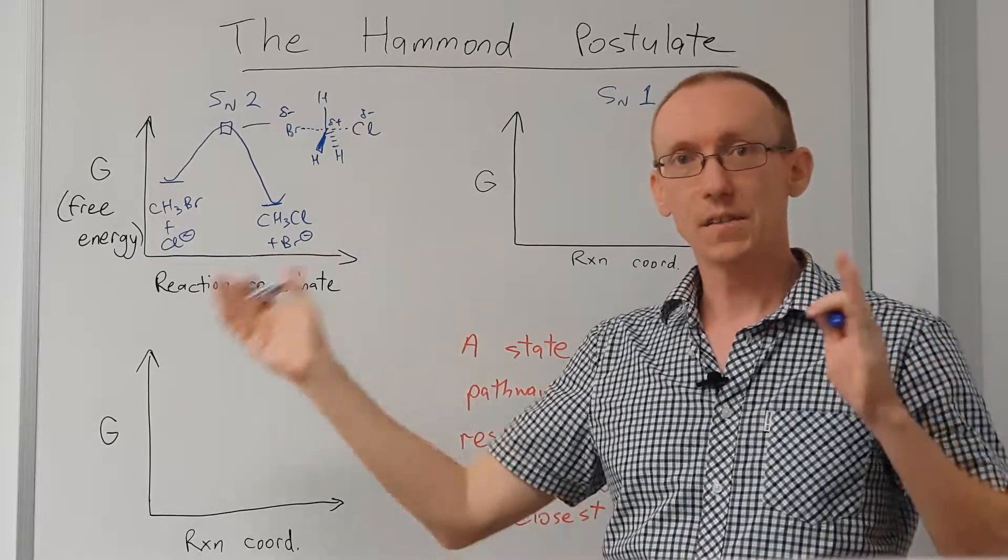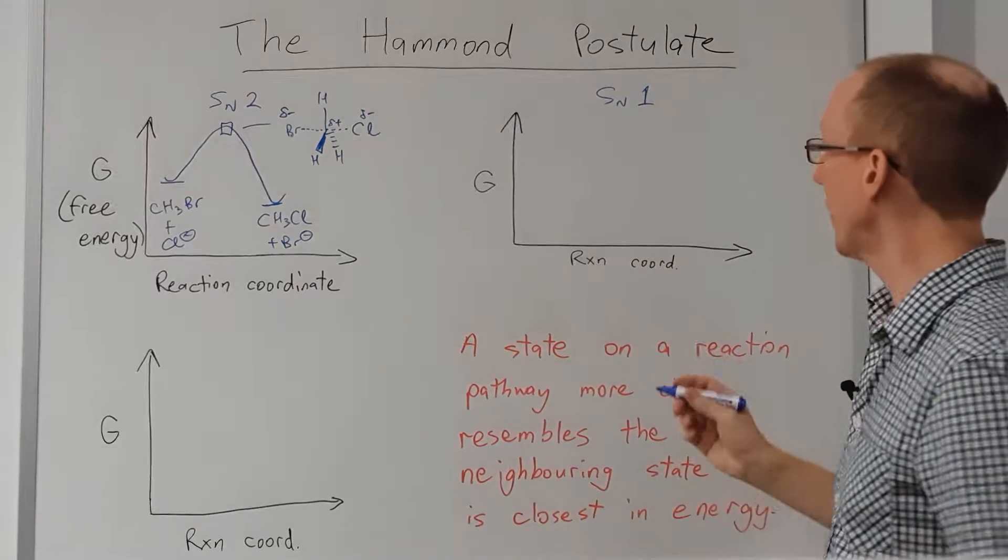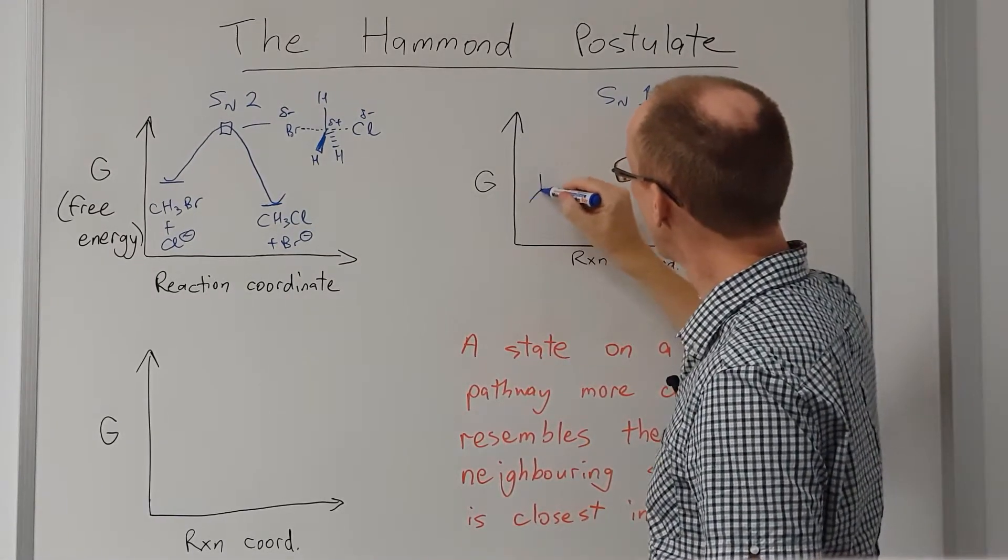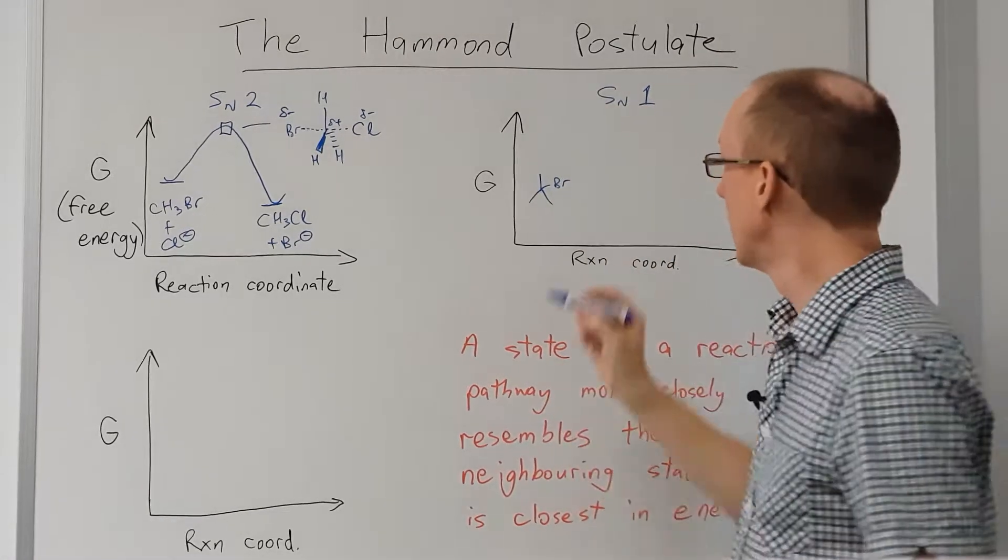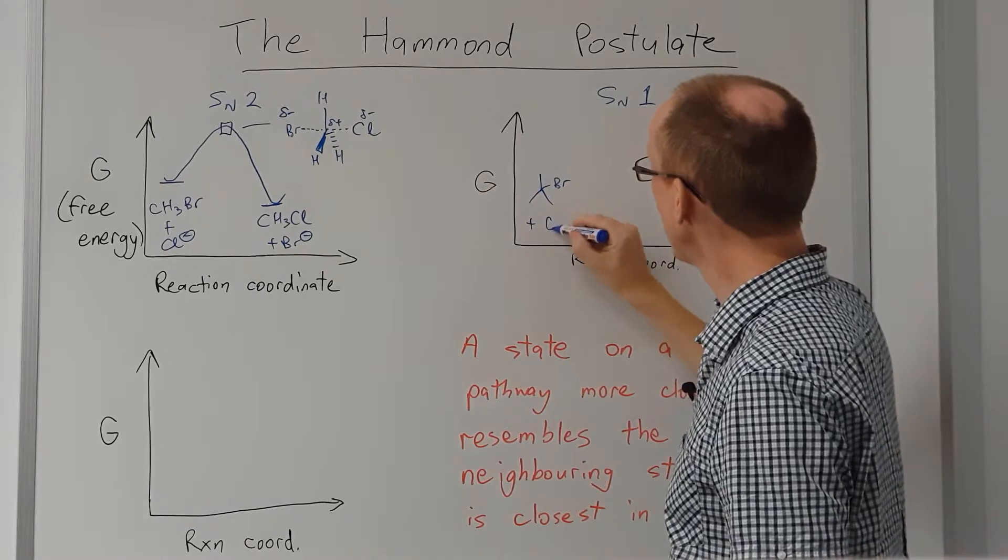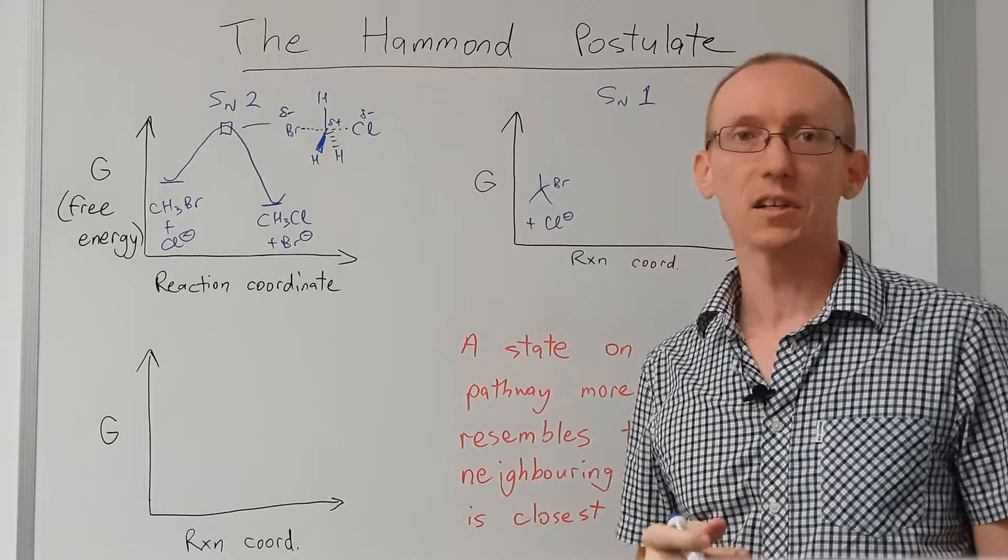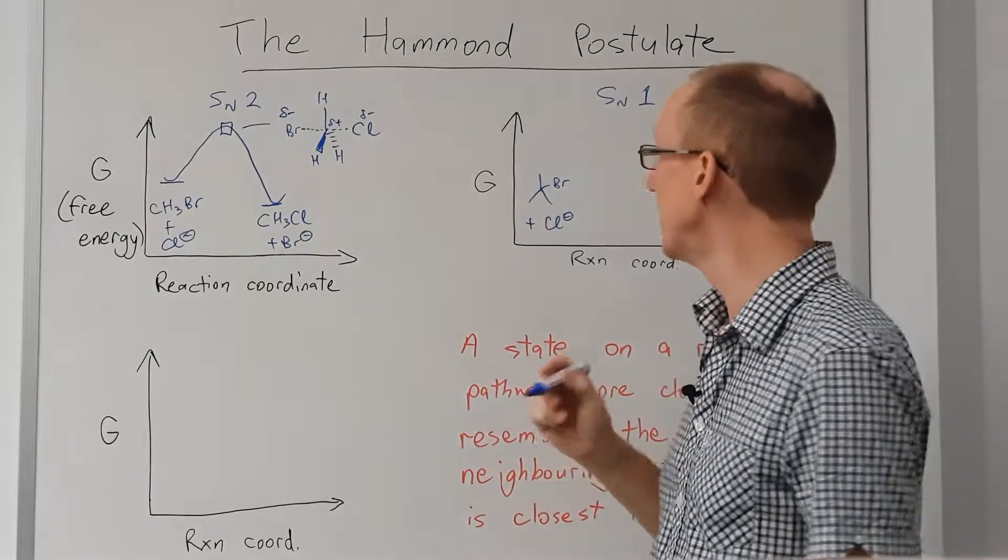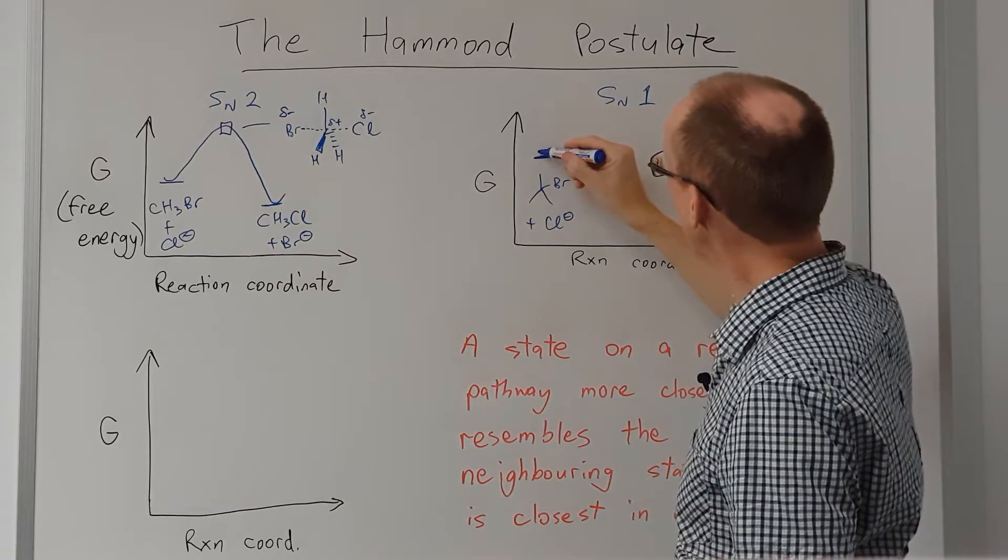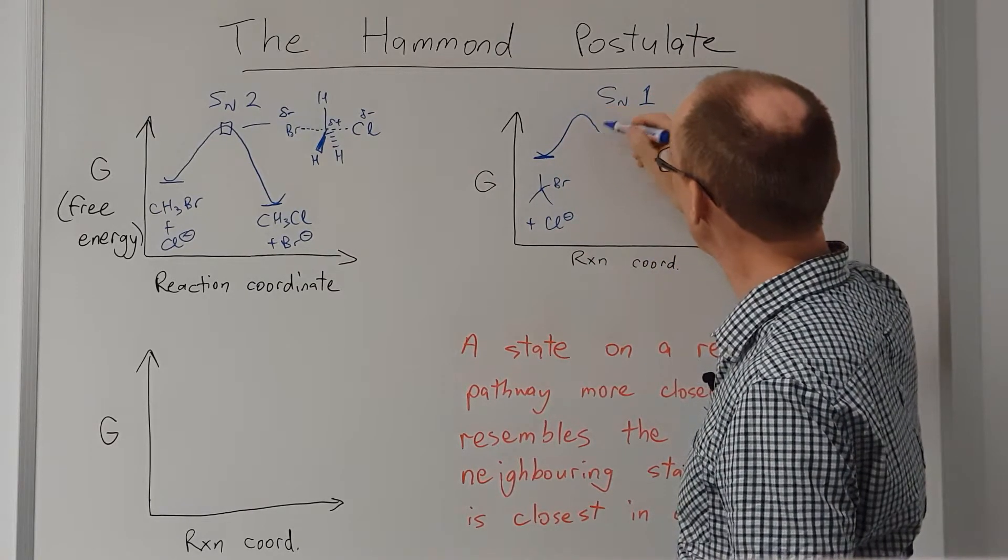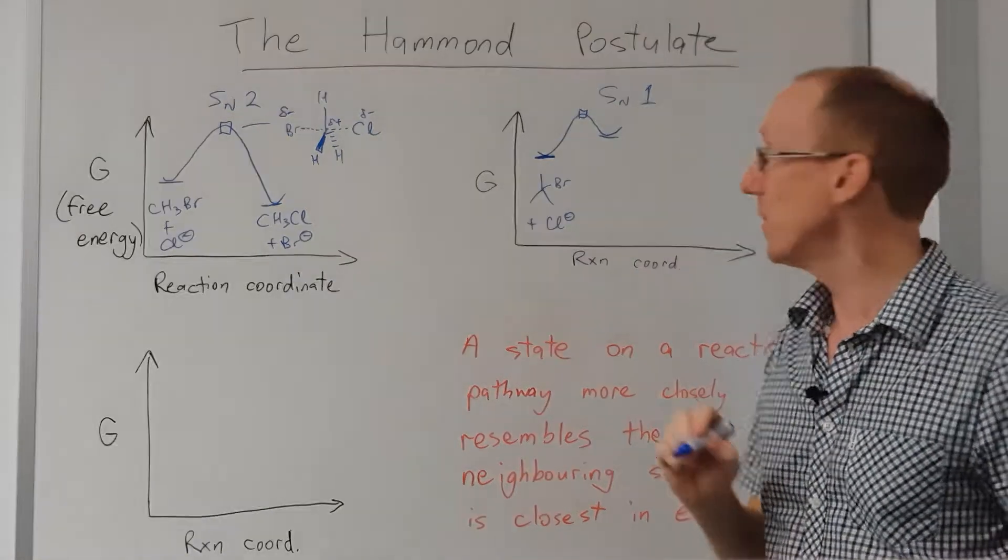It's really right in between the products and the starting materials. What about an SN1 reaction? What if we took tert-butyl bromide and did the same sort of reaction with a chloride ion? We know that the mechanism for this reaction is an SN1 process with an intermediate carbocation. If we have our starting materials here, we're going to go up through an energy barrier to a transition state that then leads to an intermediate.